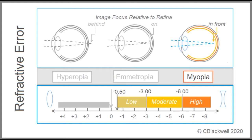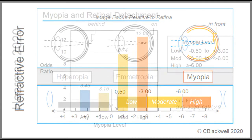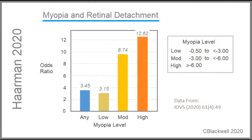These divisions are based on both reduced vision and complication rates. We have color-coded myopia levels as tan, gold, and orange, which will continue through the presentation — for example, showing increased risk of retinal detachment with higher levels of myopia.